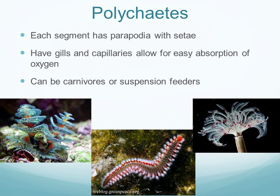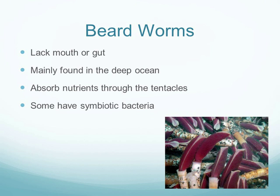Polychaetes have gills with capillaries for oxygen absorption. They are either carnivorous or suspension feeders. The fire worm is carnivorous, while Christmas tree worms and feather duster worms are suspension feeders — their segmented bodies are hidden within tubes, and what you see are their tentacles/gills collecting food particles that are then brought into the digestive system.